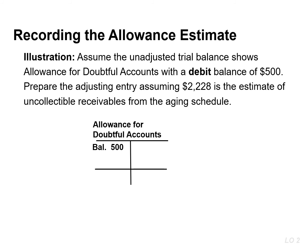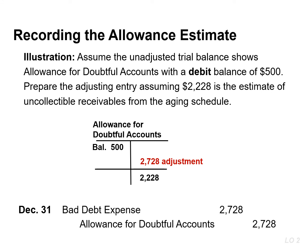The allowance account may have a debit balance prior to the adjustment. This occurs when the write-offs during the year exceeded the previous estimates for bad debt. In this instance, the company adds the debit balance to the required balance when it makes the adjusting entry. For example, if there was a $500 debit balance in the allowance account before adjustment and the required balance is $2,228, the adjustment would be for $2,728, which is the sum of the existing balance of $500 plus the required balance of $2,228. This would result in a debit to bad debt expense and a credit to allowance for doubtful accounts in the amount of $2,728.